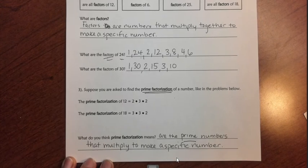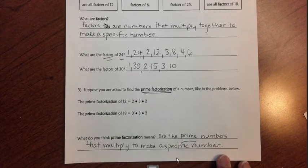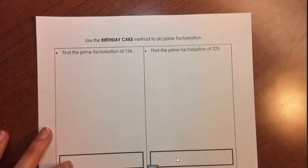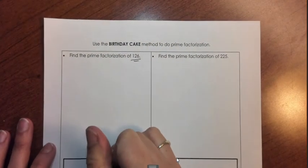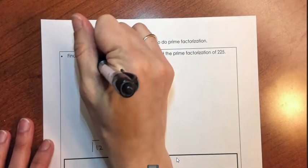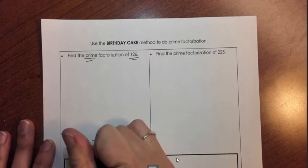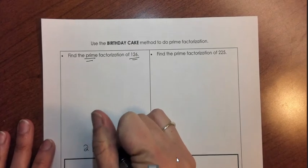I'm going to show you a method we're going to be using in class called the birthday cake. The birthday cake is going to help us find all the prime numbers that go into a specific number. For example, we want to find all the prime numbers that make 126. I'm going to put 126 at the bottom and make that the first layer of my birthday cake. Now I need to think about a prime number that goes into 126 — 2 is prime and I think 2 goes into 126. 2 goes into 126 sixty-three times.